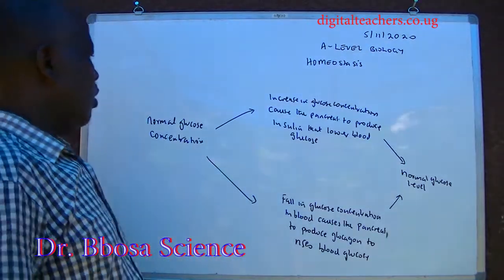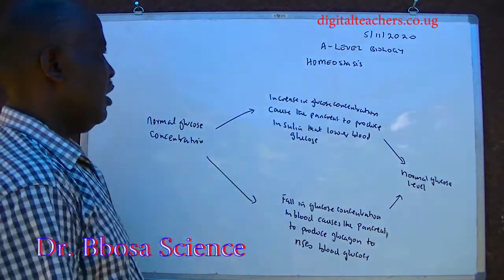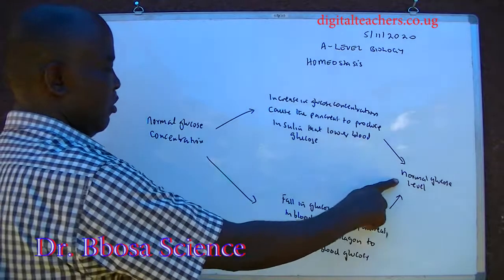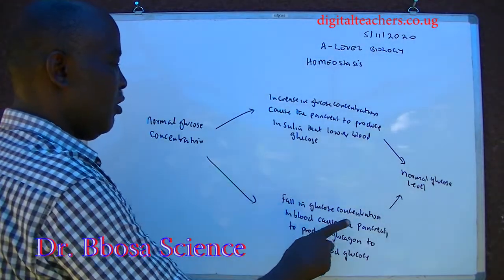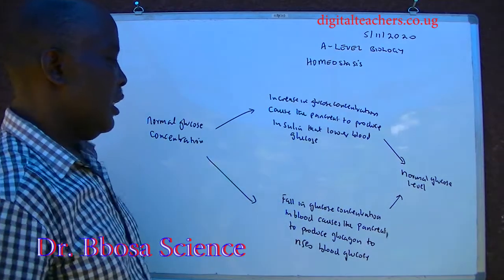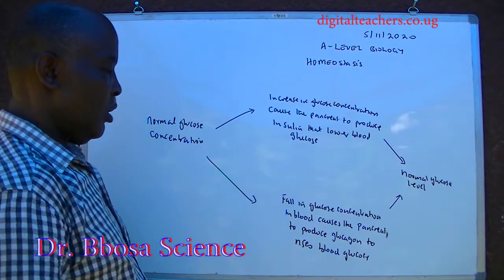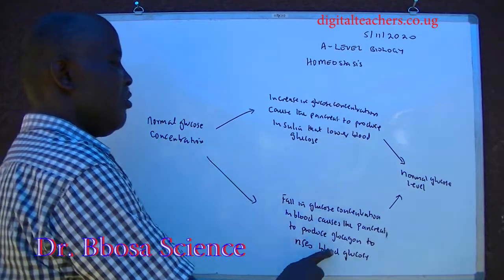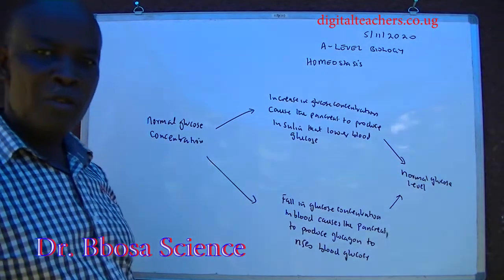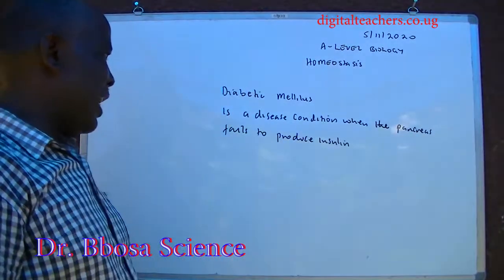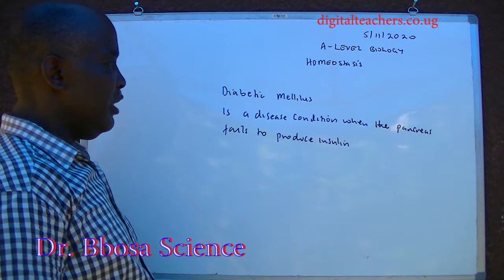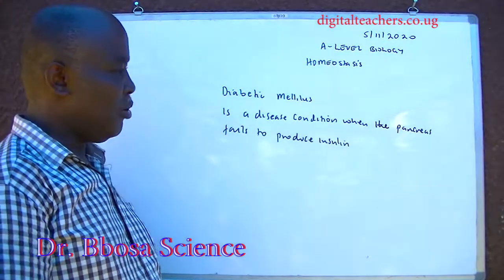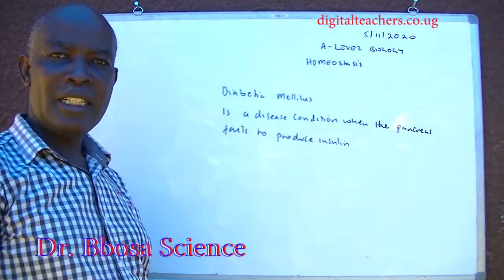In other words, an increase in glucose concentration causes the pancreas to produce insulin that lowers glucose concentration to normal. A fall in glucose concentration in blood causes the pancreas to produce glucagon to raise blood glucose to normal. So from normal, a fall leads to a rise, and a rise leads to a fall of blood glucose concentration to normal. Diabetes mellitus is a disease condition where the pancreas fails to produce insulin to regulate blood sugar, and usually blood sugar appears in urine.